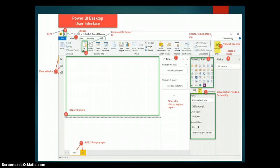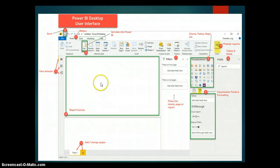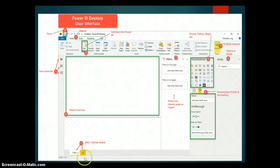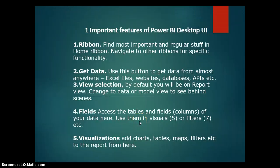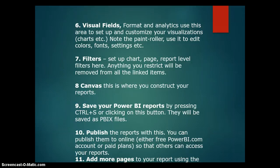We also have the Filters pane where you can filter your data or report based on categories and criteria. Then we have the Report Canvas where you build your visuals — you can increase the size and it defaults to a 16:9 ratio. We also have pages, similar to Excel sheets, where you can add Page 1, Page 2, Page 3, and so on. Finally, there is the Publish button where you share your report online. So the most important features are: Ribbons, Get Data, View Selector, Fields, Visualizations, Filters, Report Canvas, Pages, and Publish.